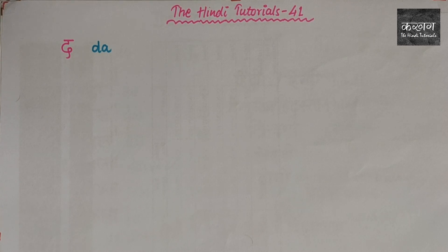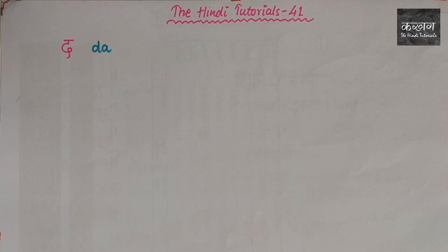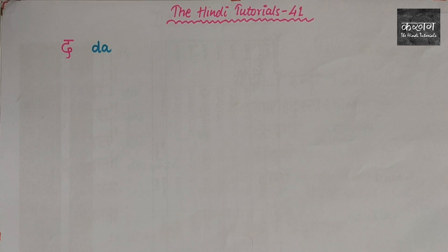I'm back with the next consonant, which is the dental D. It's not the same as the D of English. To pronounce it, you just have to ensure that your tongue touches your teeth. To make it easier, you can place your tongue in between the upper and lower teeth and pronounce the D.